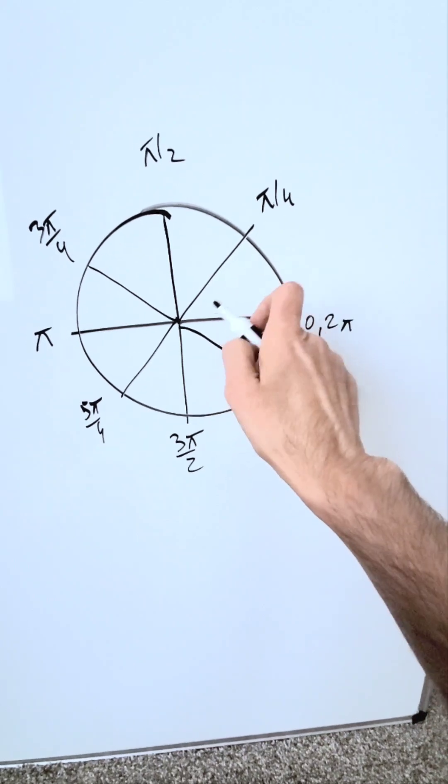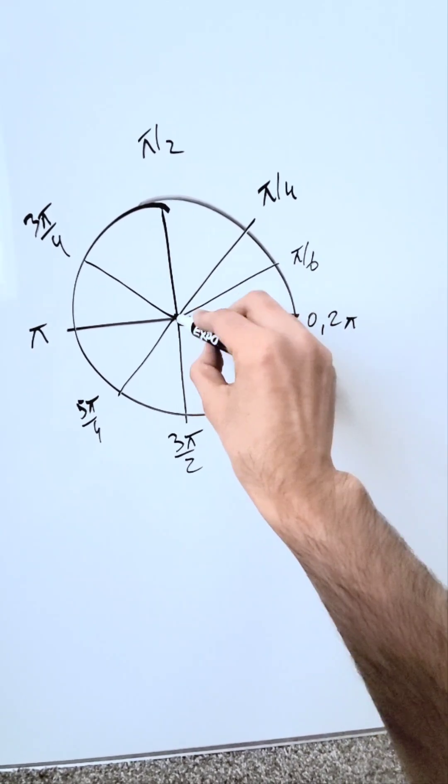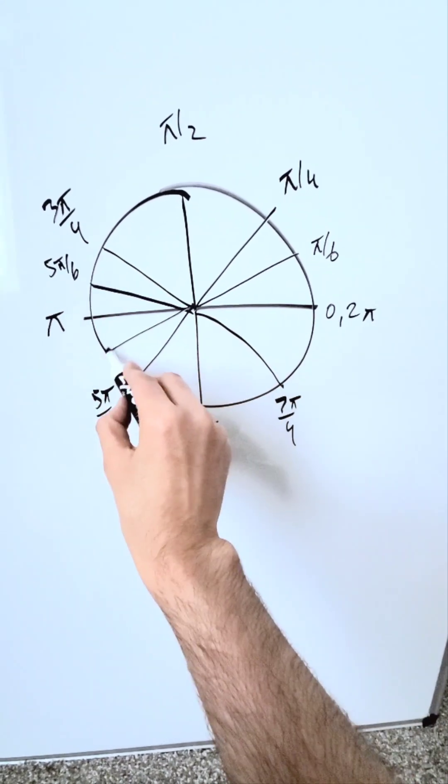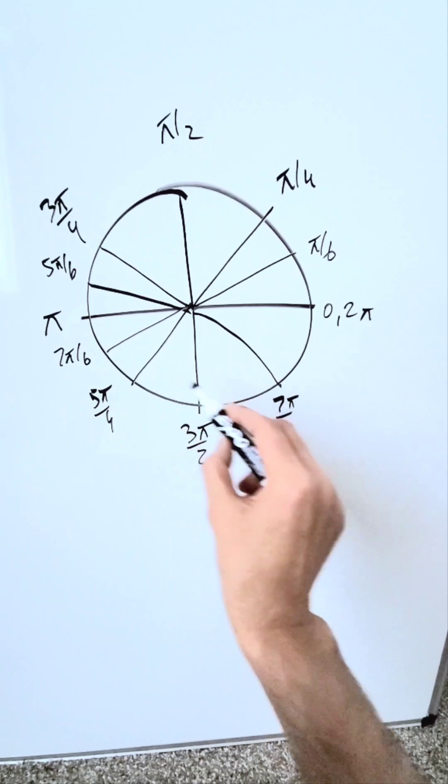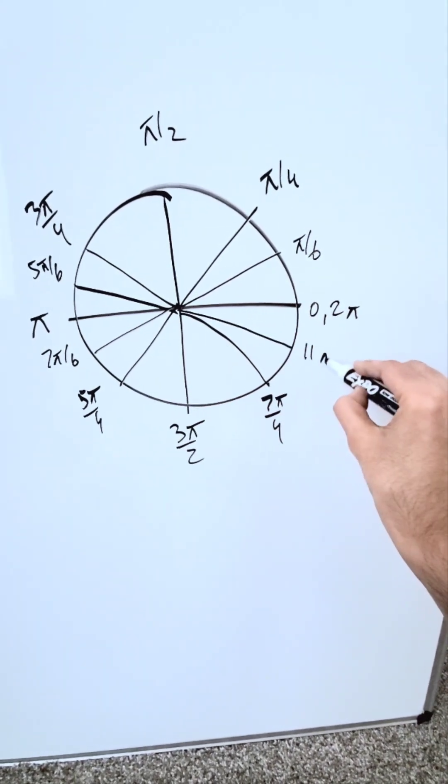We will be looking here at the 30 degree angles. These will have denominators of 6. Here's 30, π over 6. 150, right over here. 5π over 6. 210, right here. 7π over 6. I have over here 330, 11π over 6.